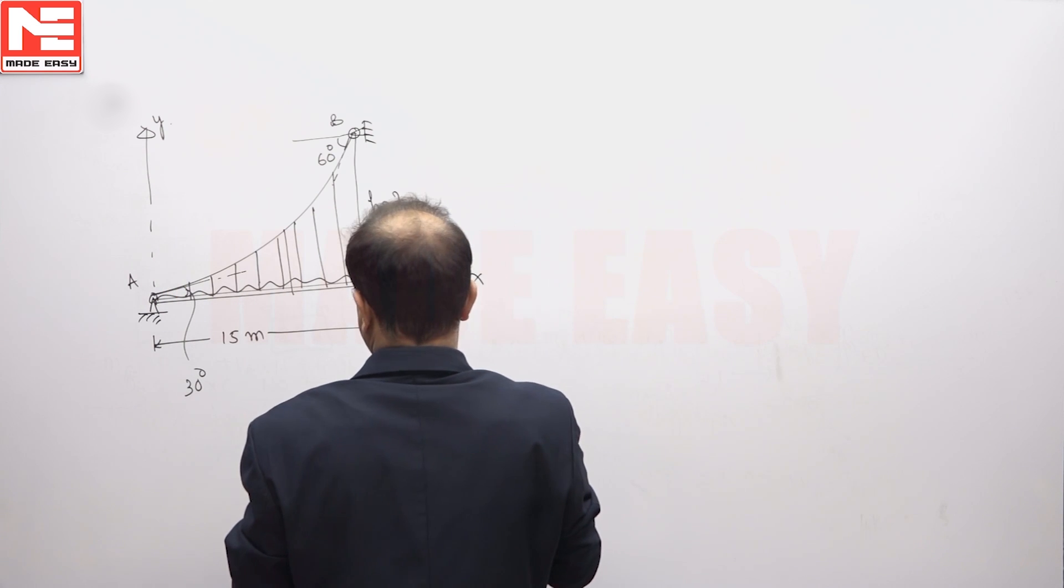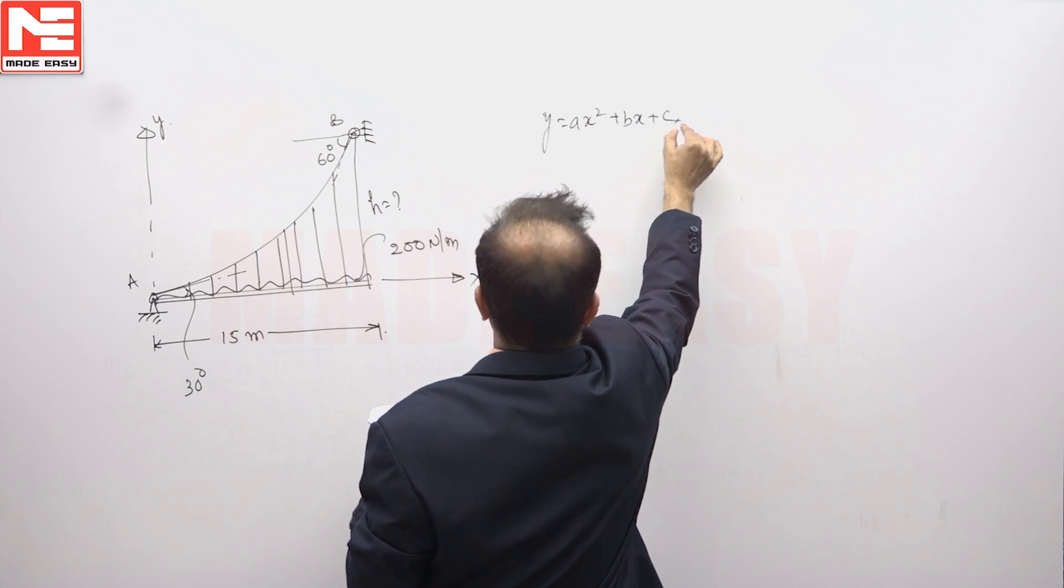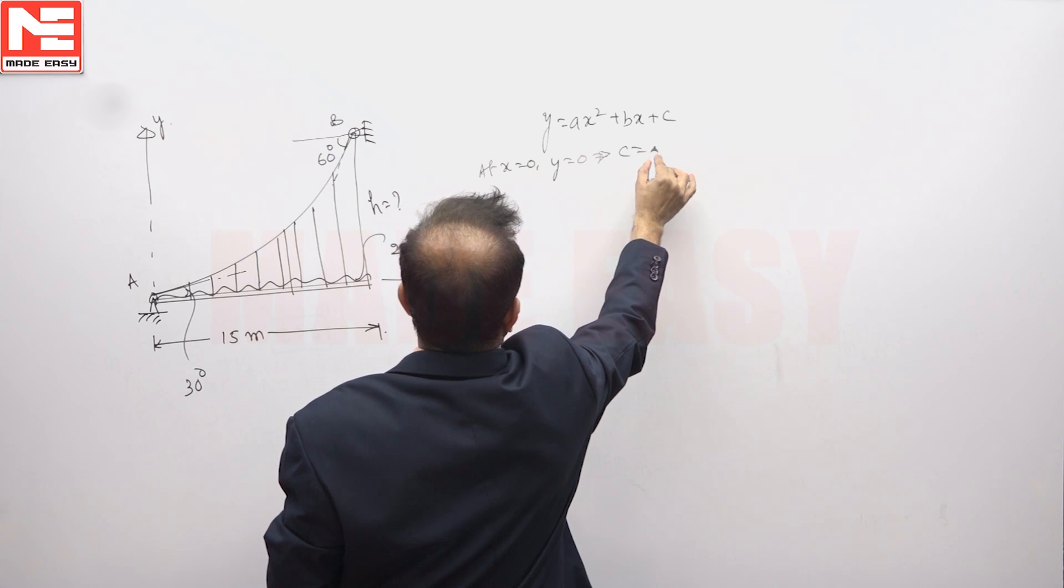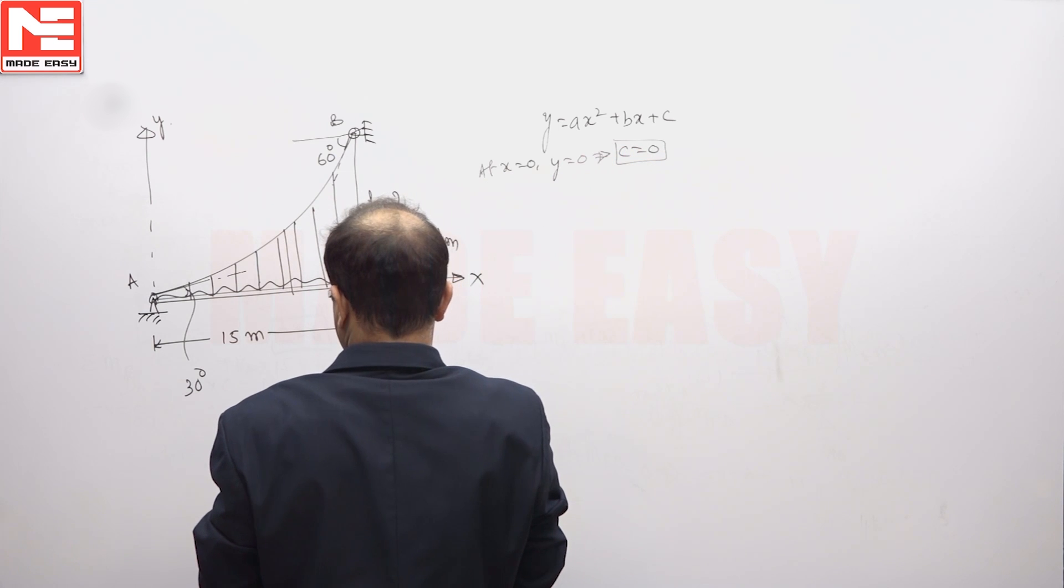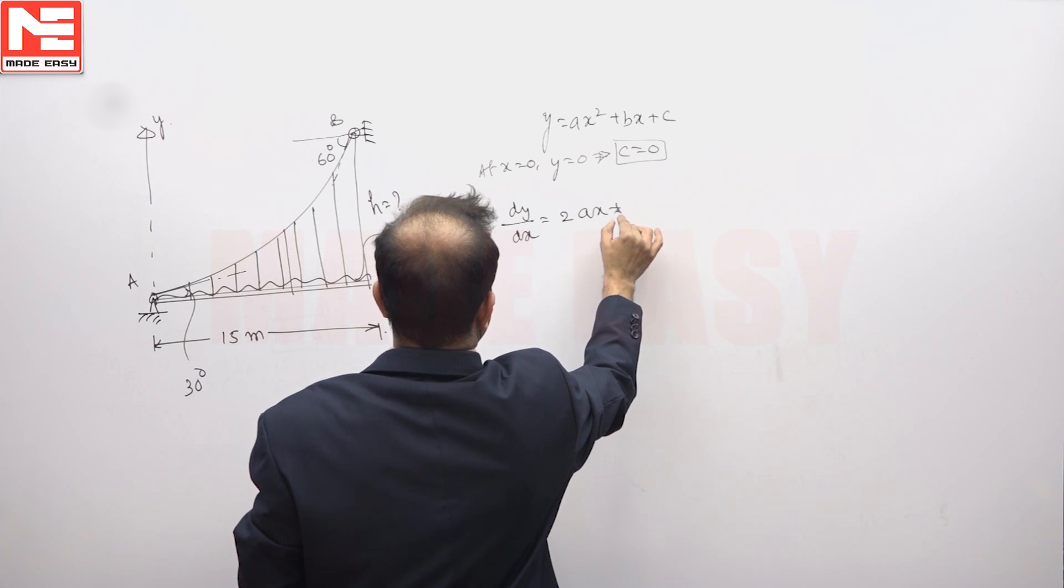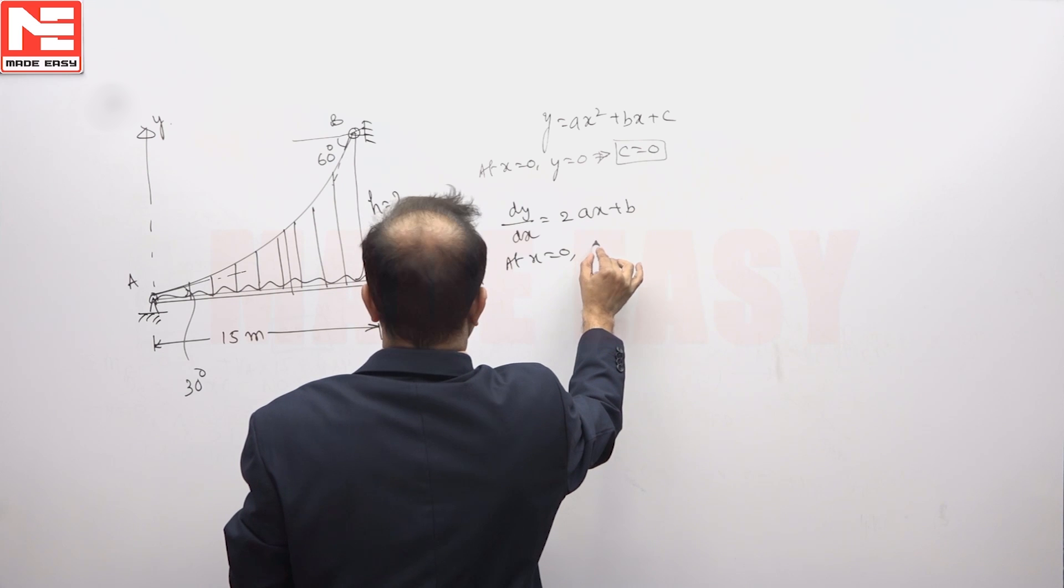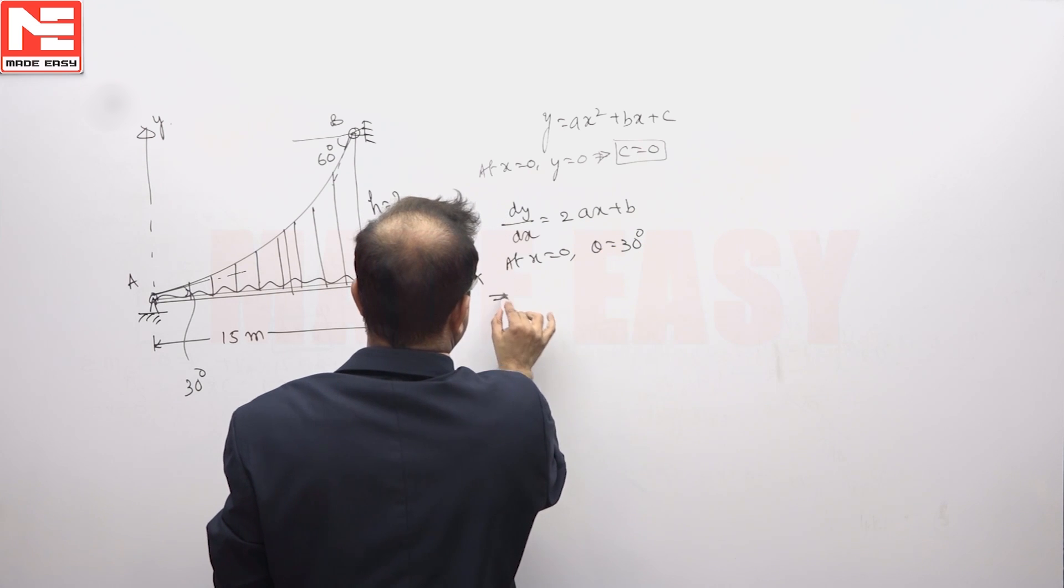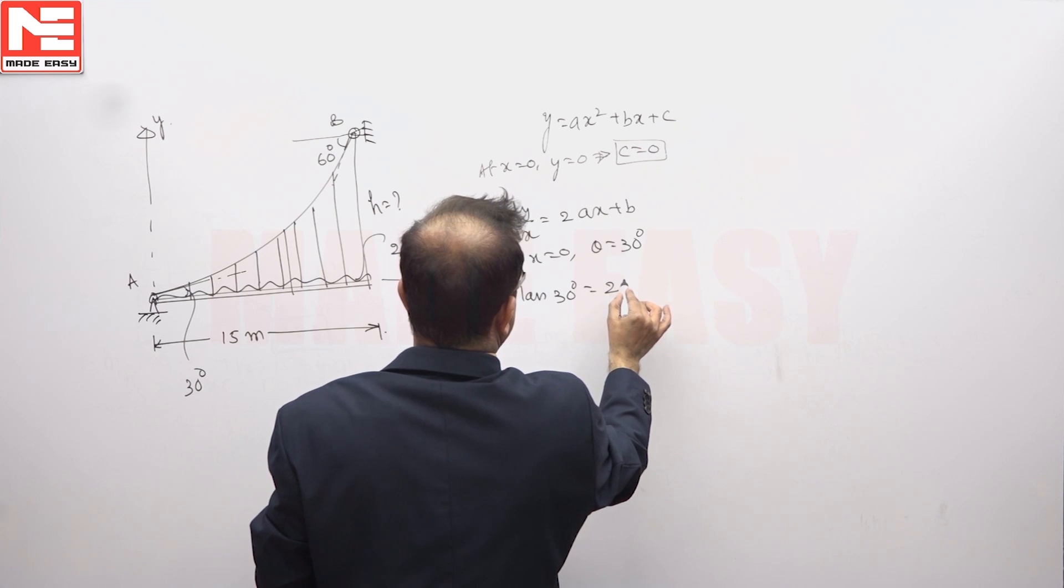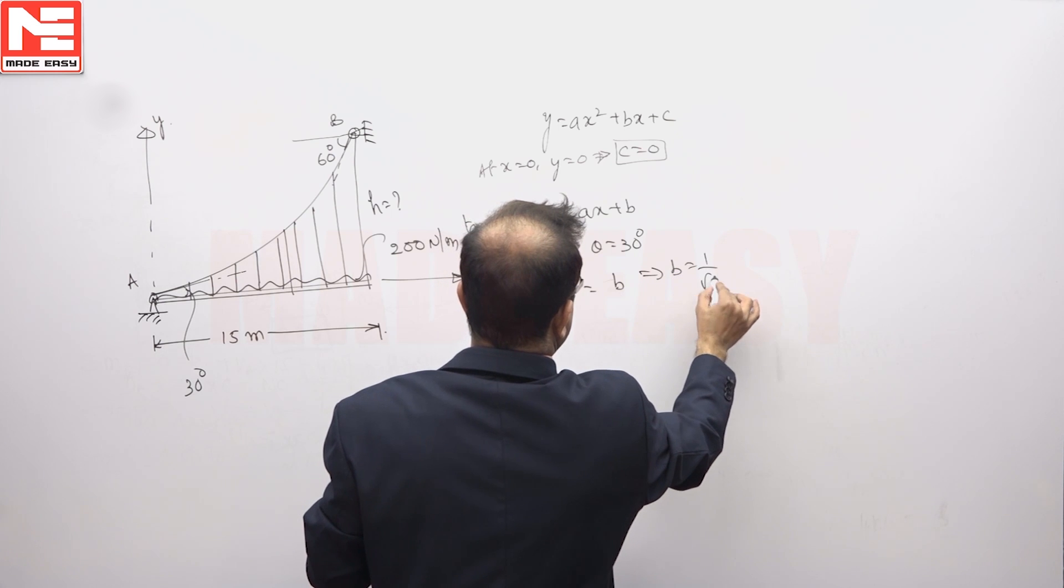We have to use the second order equation y is equal to Ax square plus bx plus c. At x is equal to 0, y is equal to 0. That means c is equal to 0. Then dy by dx means tan theta, tan 30 degrees is equal to b. So you will get b is equal to 1 by root 3.